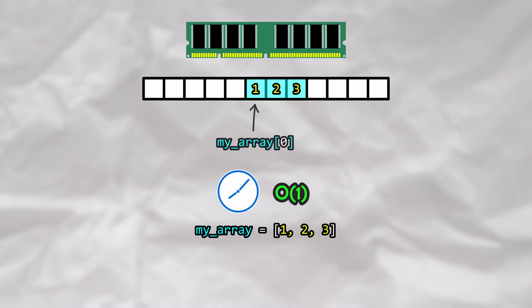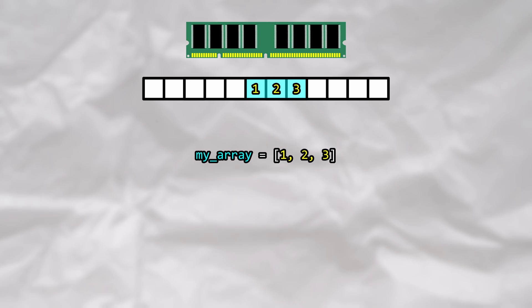If we index into the start of the array, the middle of the array, or the end of the array, the amount of time it takes to fetch the data remains the same. This is because when you index into an array, your computer will perform some simple pointer arithmetic.